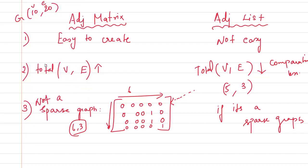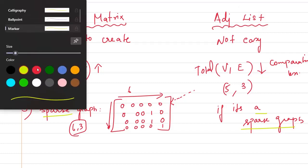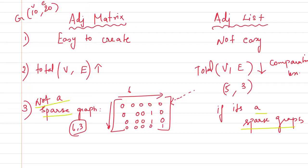To highlight again: if it is not a sparse graph, you need to go for adjacency matrix; if it is a sparse graph, you need to prefer adjacency list. The reason is memory — static representation is one major drawback of adjacency matrix. Adjacency list supports dynamic memory allocation at runtime, which is a very important advantage.